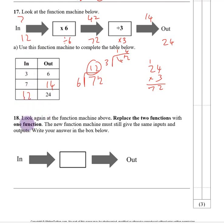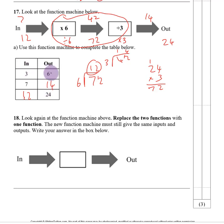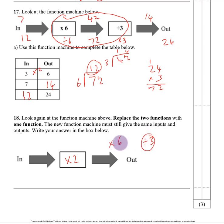Number eighteen. Replace the two functions with one function that gives the same inputs and outputs. Notice that every number doubles: 3 to 6 is times 2, 7 to 14 is times 2, 12 to 24 is times 2. So the single function is times by 2. You can also work this out algebraically: times by 6 then divide by 3 — 6 divided by 3 is 2 — so you are left with times by 2.